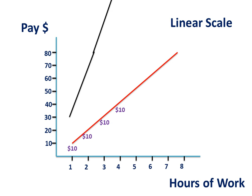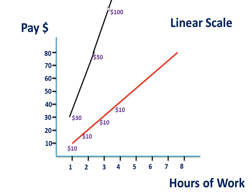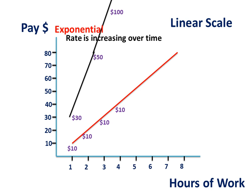But this doesn't fit for all sorts of data. Let's look at this other line. In the first hour this person earned $30, but in the next hour they've earned $50, which gives them a total of $80 overall. In the third hour they've earned $100, which means they're going to have $180 overall. We can quickly see that this sort of data is very problematic for a linear scale graph. We refer to this sort of data as exponential.